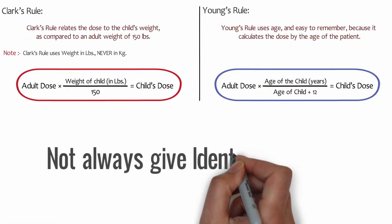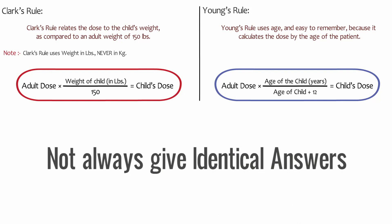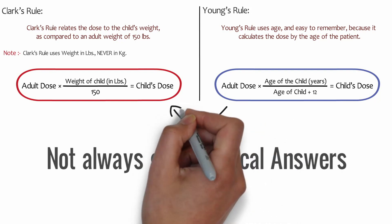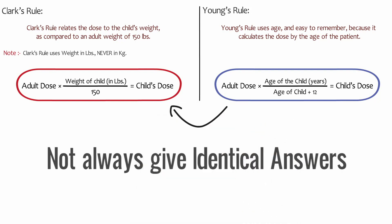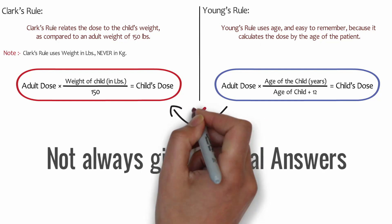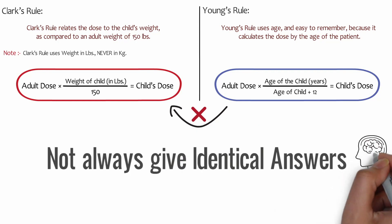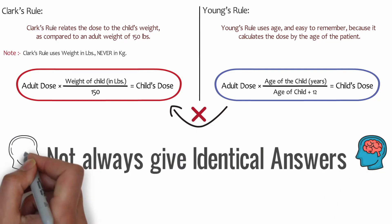Clark's Rule and Young's Rule will not always give identical answers. So if you're asked to calculate a child's dose by Young's Rule and you use Clark's Rule instead, or another method, or if you forget both of them, you will not get the correct answer on the exam. Please memorize these two formulas.